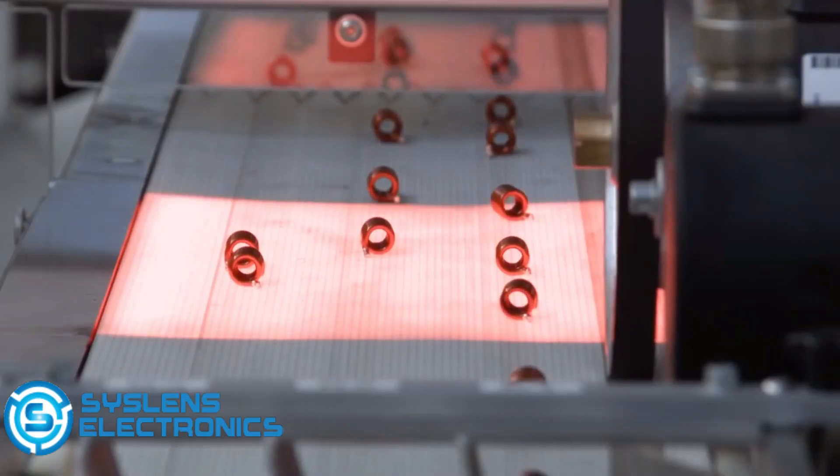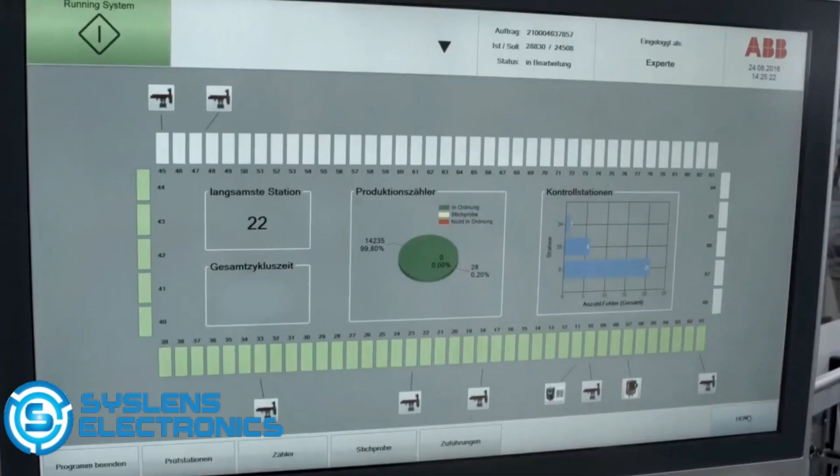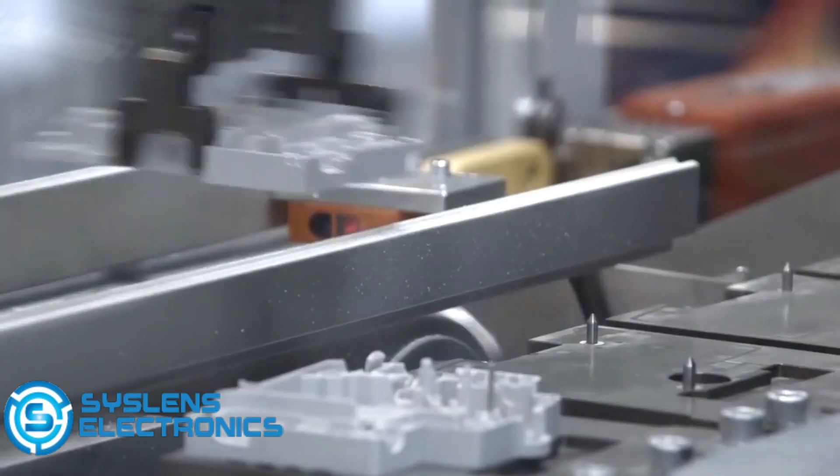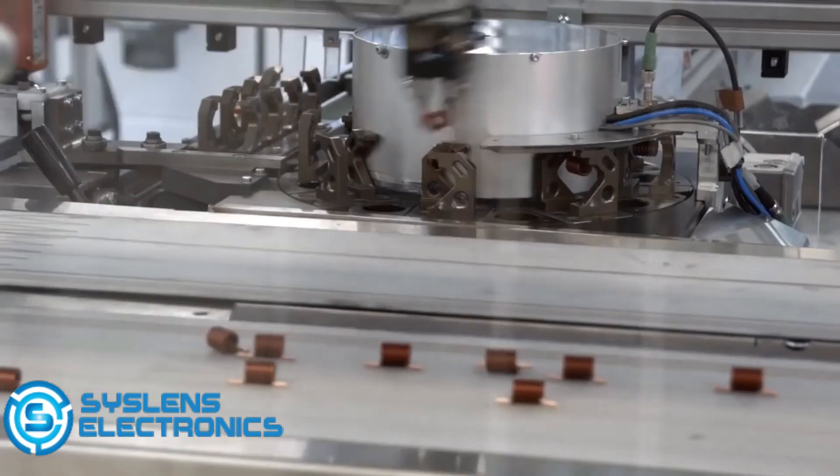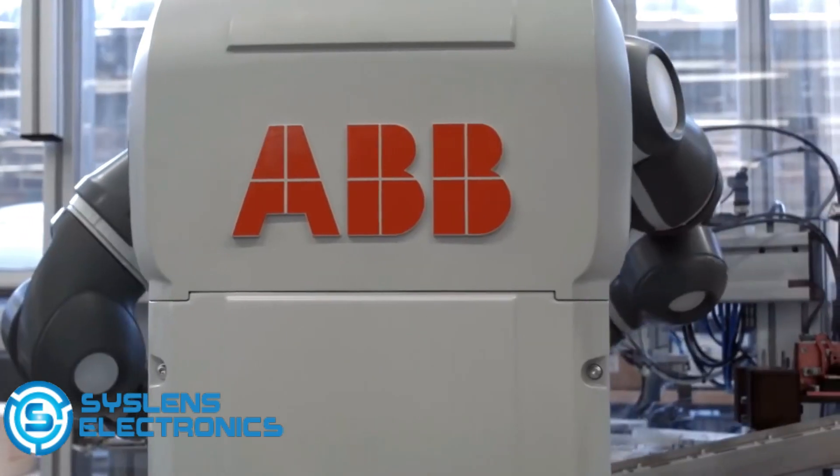The production line is equipped with sensors to capture data about the products and machines at every stage of the process, while seven ABB robots perform a variety of complex roles.